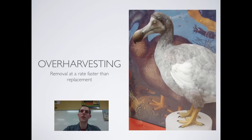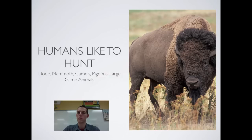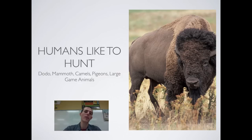Over-harvesting is the next major cause of biodiversity decline — this is removal at a rate faster than replacement. Major species affected include the dodo bird, a flightless bird that lived on islands in the South Pacific. When sailors arrived, the birds had never seen humans and weren't scared. Sailors hunted dodos, and within 80 years the dodo became extinct. The same thing probably happened with giant mammoths; there used to be camels in North and South America — not anymore. Passenger pigeons were similarly wiped out, and large game animals like rhinos, elephants, hippos, and giraffes continue to be hunted at unsustainable rates.